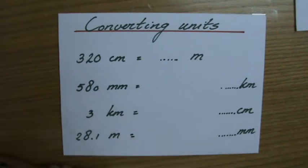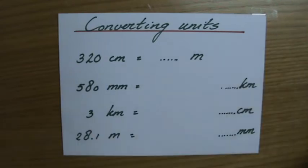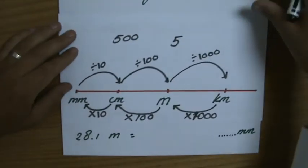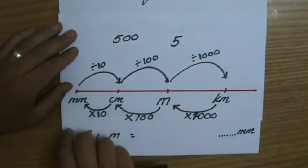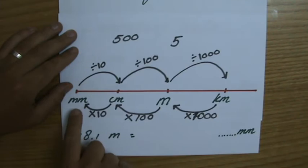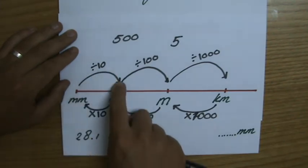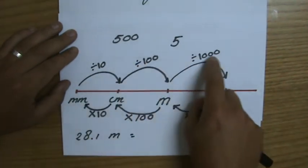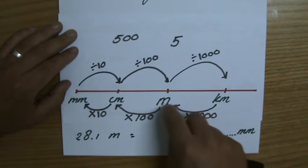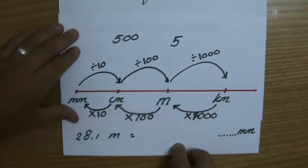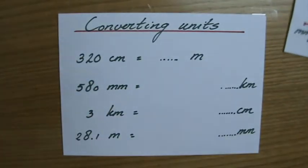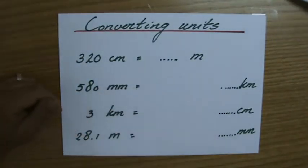This example question involves converting units. In a previous video, I constructed a line: going from a small unit to a big unit you divide by ten, a hundred, or a thousand, and the other way around you multiply. So from centimeters to meters is one step on that line.